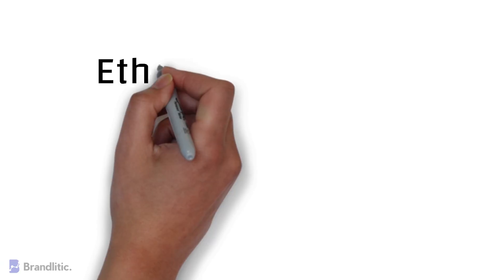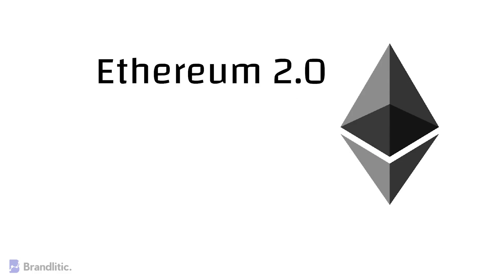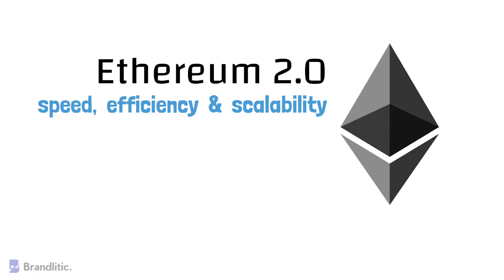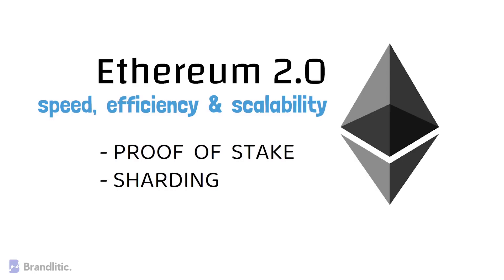Ethereum 2.0 is an upgrade to the already existing Ethereum blockchain and aims to increase the speed, efficiency, and scalability of the Ethereum network, enabling it to address bottlenecks and increase the number of transactions processed per second. Ethereum 2.0 has some fundamental changes in its structure and design compared to its previous version. The two major changes are Proof of Stake and Sharding.